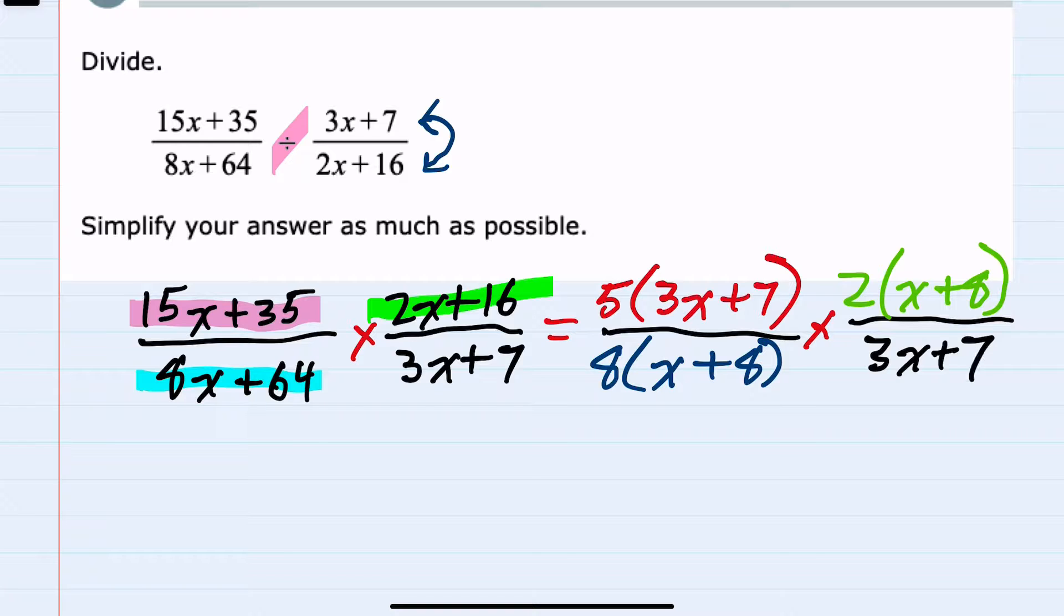And now that we have two fractions being multiplied, we can look for any opportunity to cancel in the numerator and the denominator. The first thing we notice is that there is a 3x plus 7 in the numerator that will cancel with a 3x plus 7 in the denominator. There is an x plus 8 in the numerator that will cancel with an x plus 8 in the denominator.